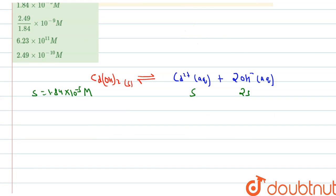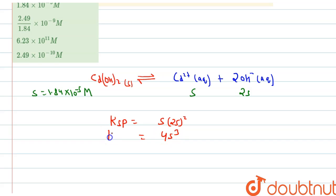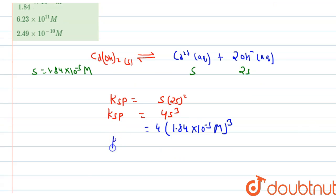Now we can find the value of Ksp. Ksp = [Cd²⁺][OH⁻]² = s × (2s)² = 4s³. Substituting s = 1.84×10⁻⁵, we calculate Ksp = 4 × (1.84×10⁻⁵)³ = 24.9×10⁻¹⁵ M³.